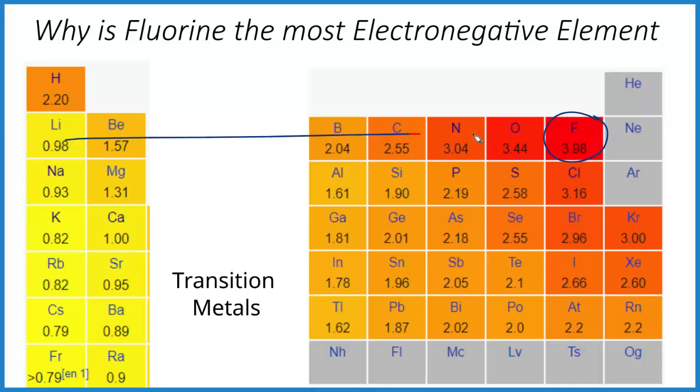As we go across the period, electronegativity increases, and as we go up a group, it increases. So fluorine is the most electronegative element on the periodic table. And here's why.